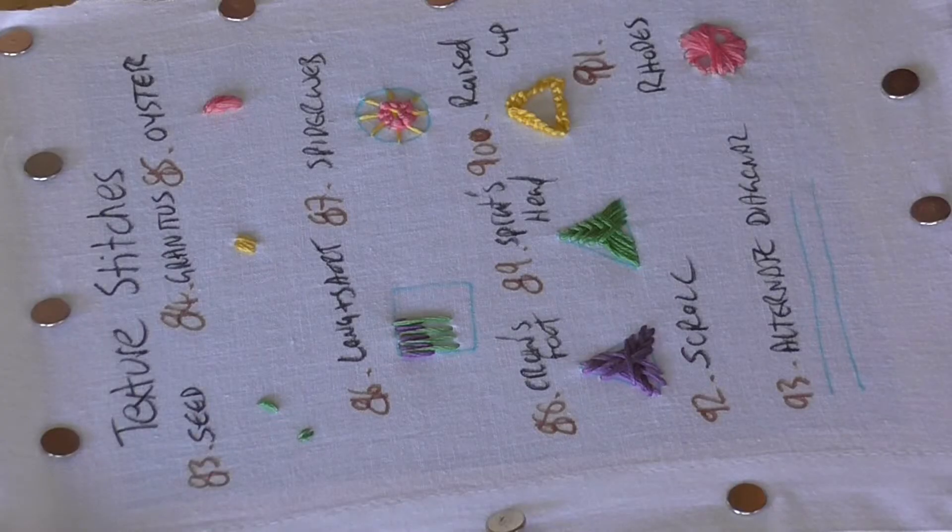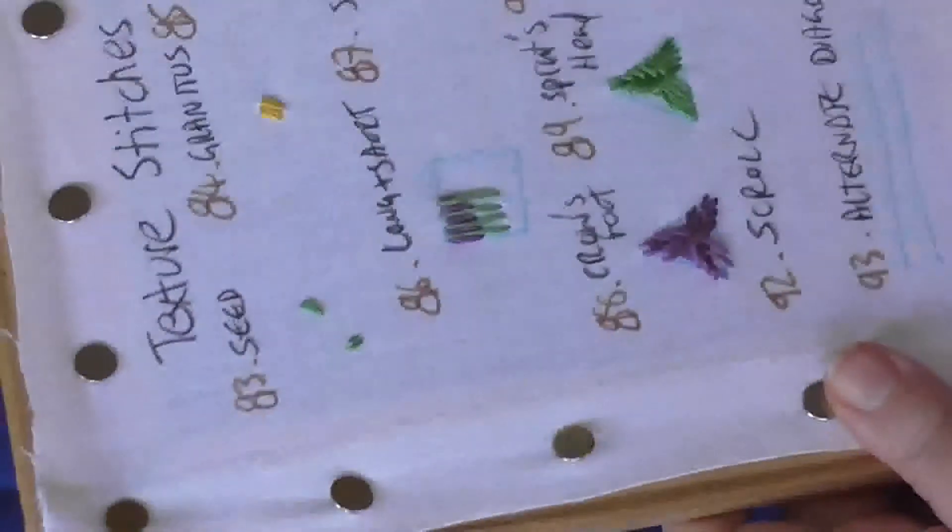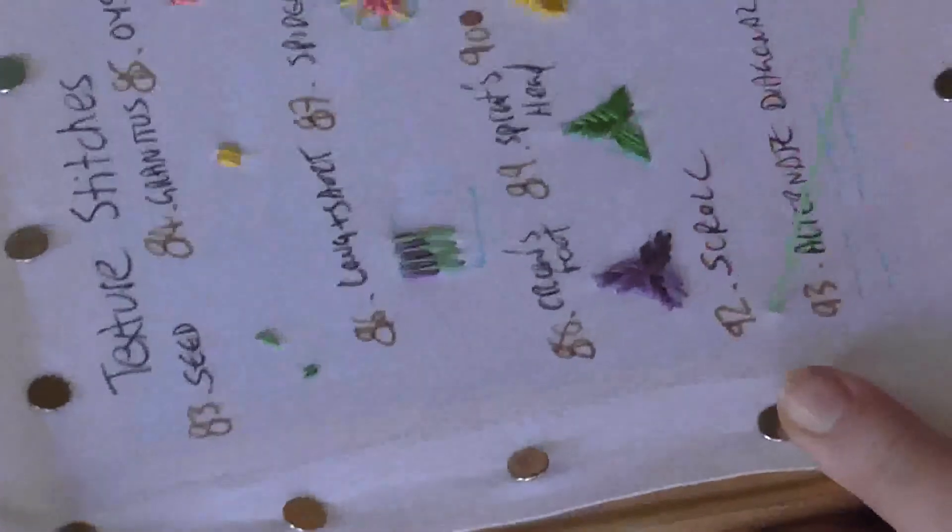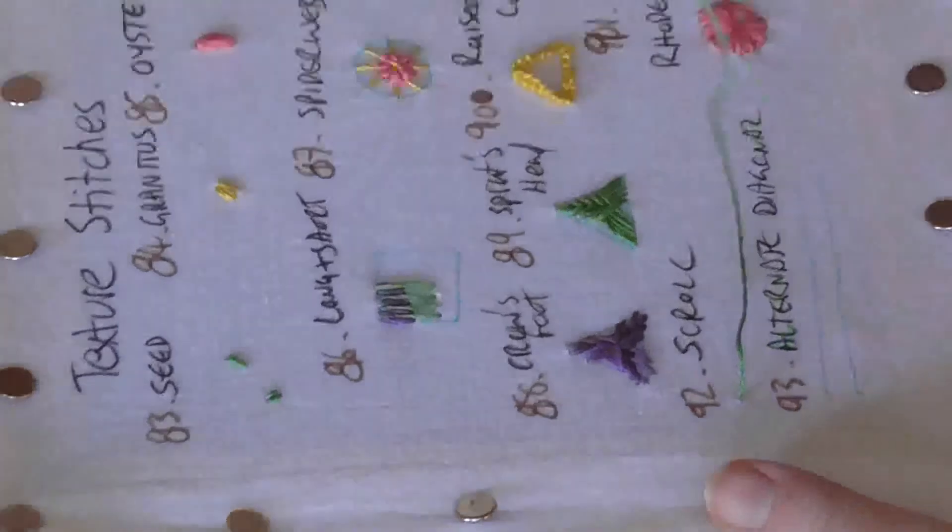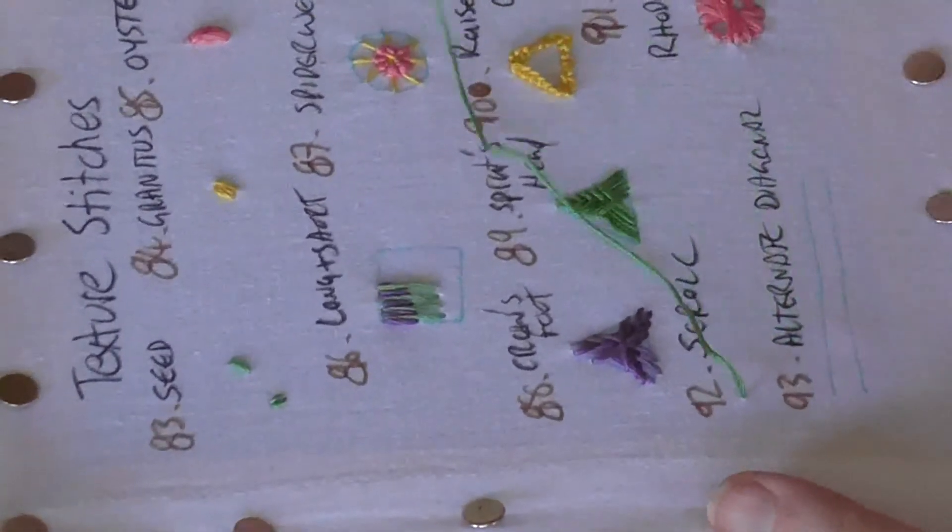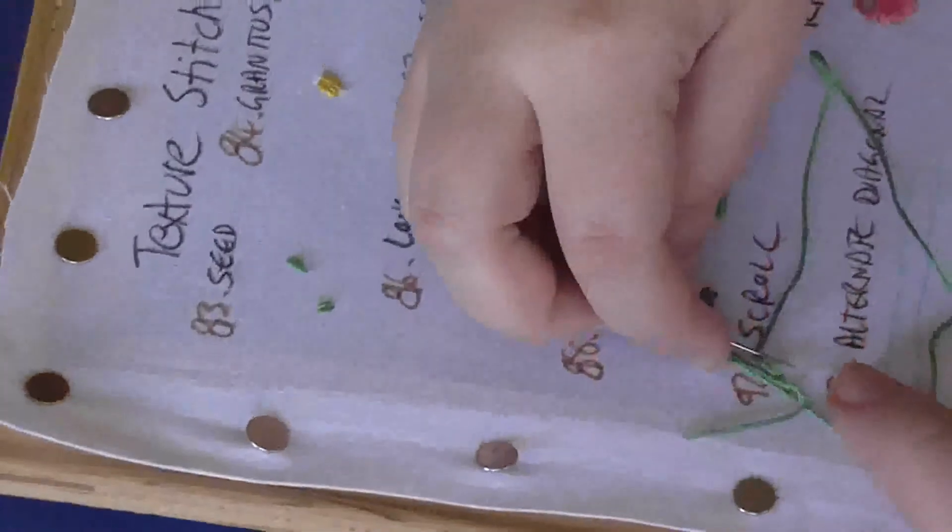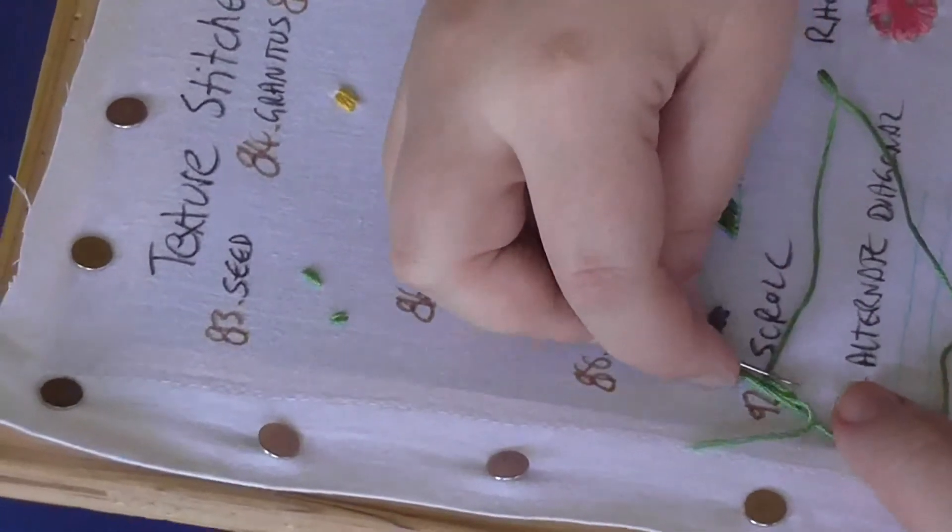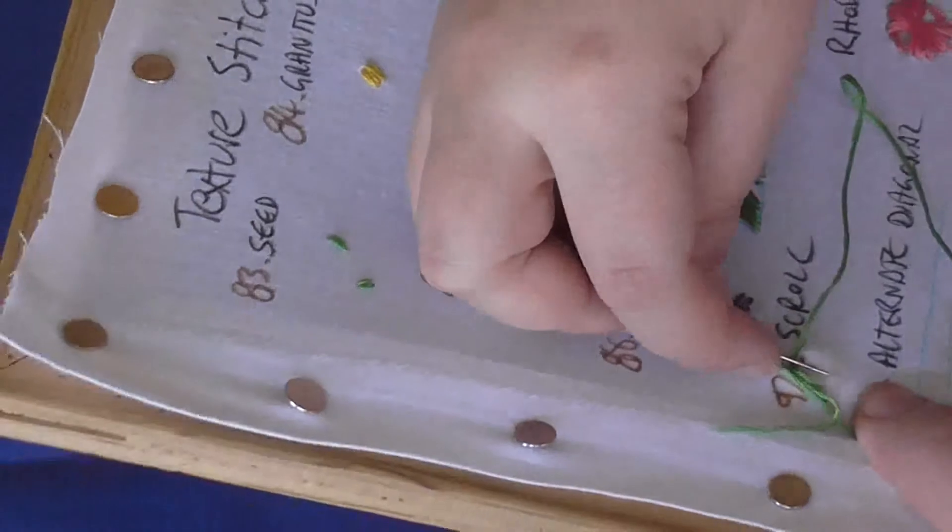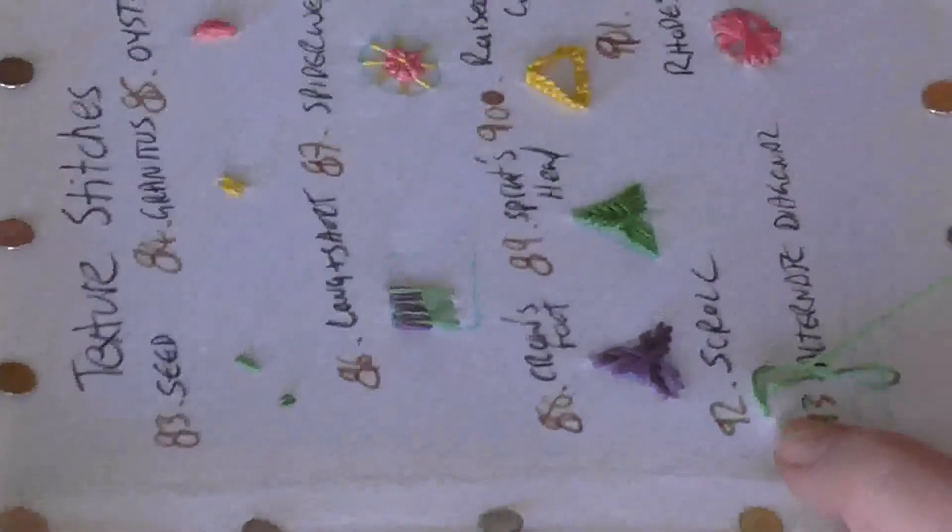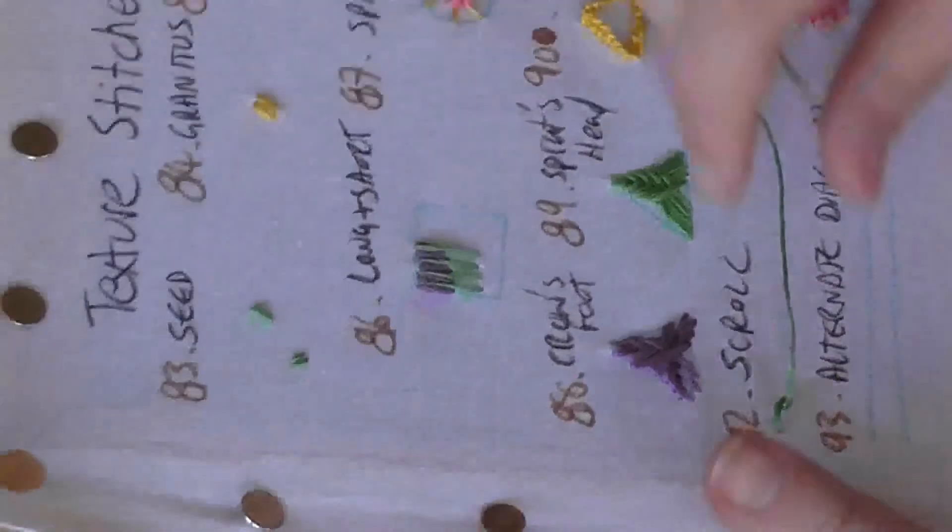Moving on to the last two texture stitches, the first is a scroll stitch. This is really quite an easy one. You bring your thread through and loop around, then take a tiny stitch of one or two threads, and then pull that through so you make a little knot like that.